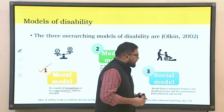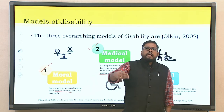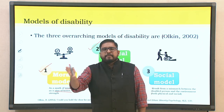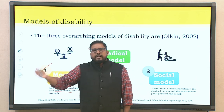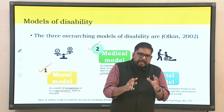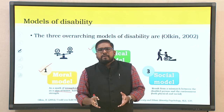The second model is the medical model, which views disability as an impairment in a body system or function that is inherently pathological. Whatever happens with respect to disability has a pathological interpretation, and it can be cured only through medical intervention. Disability here is restricted entirely under the umbrella of the medical field.